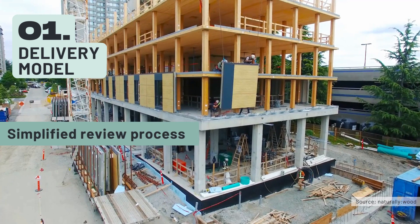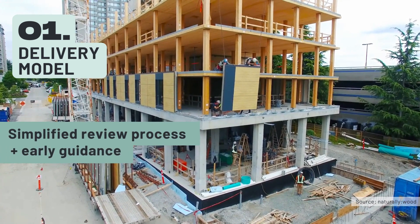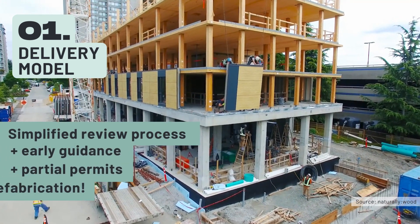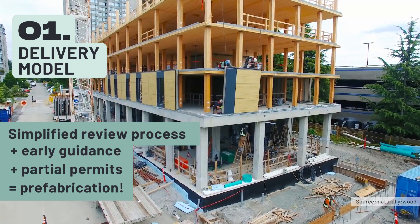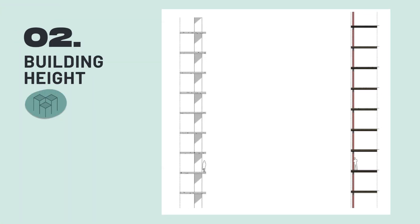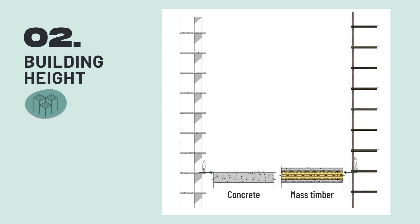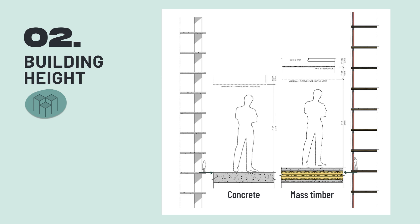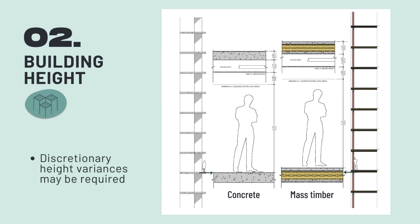Simplifying the review process and providing early guidance and partial permits will allow prefabrication to begin early. Mass timber buildings may not fit under the same height restrictions as a concrete building because mass timber floors are thicker than concrete floors, which translates to comparatively taller buildings to achieve the same interior clearances. To accommodate this, discretionary height variances may be required.